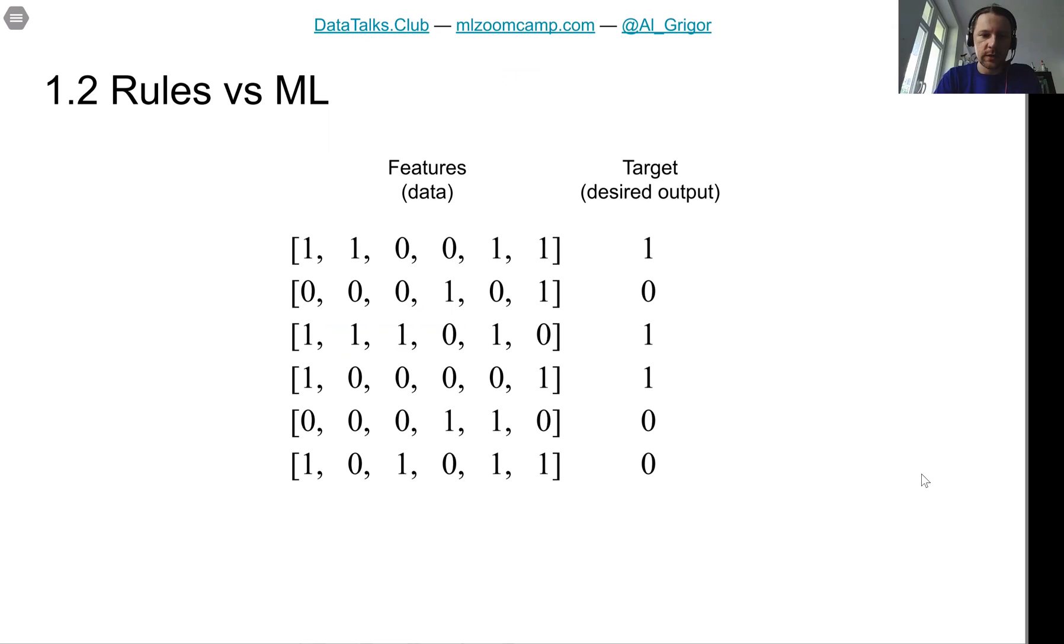They just look at the training data, at our features, and they use statistics and mathematics to figure out what are the patterns present in these features and what we can use to actually make a decision if something is spam or not.